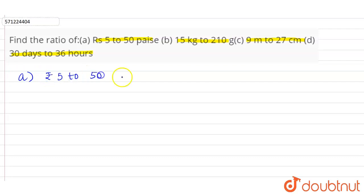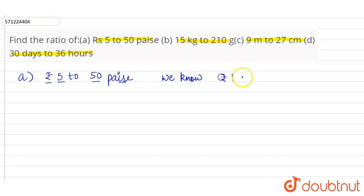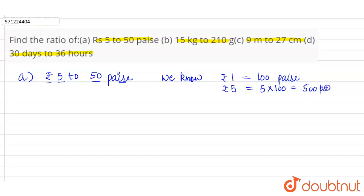Here we observe that the unit of 5 is rupees and the unit of 50 is paise. We have to convert the units to make them the same so we can compare the quantities. We know that 1 rupee is equal to 100 paise, so Rs 5 equals 5 × 100 = 500 paise.